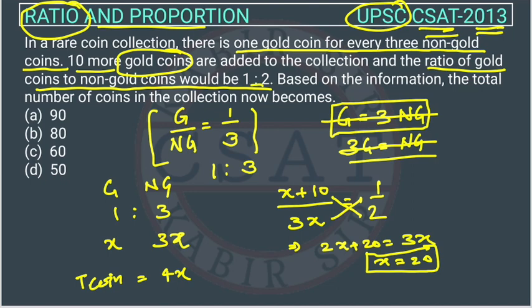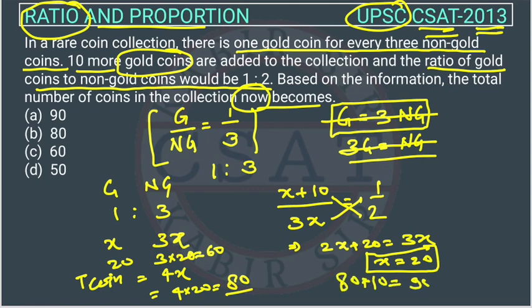Based on the information, the total number of coins in the collection now - the question is asking number of coins now. So previously the coins are x is 20 and this is 3 into 20, so these are 60. Total are, otherwise you can directly write 4 into 20, so previously are 80 coins. Now 10 more are added, so it will be 80 plus 10 is equal to 90. So the answer is option A. This was an easy question.